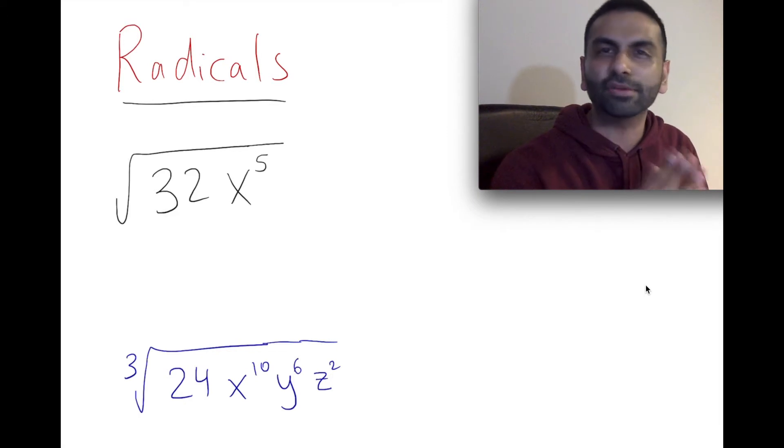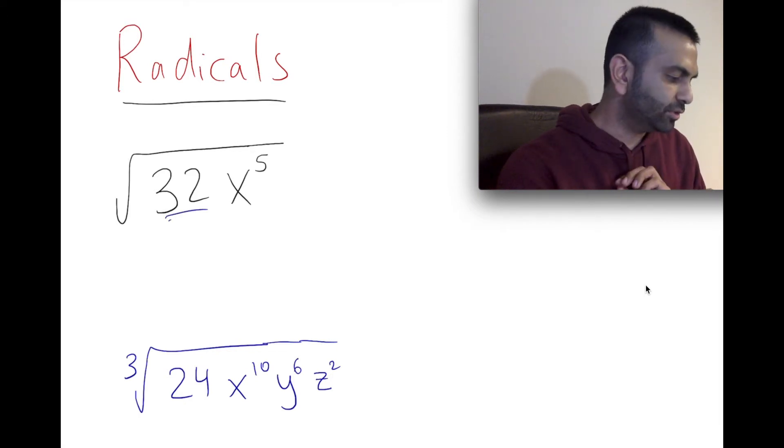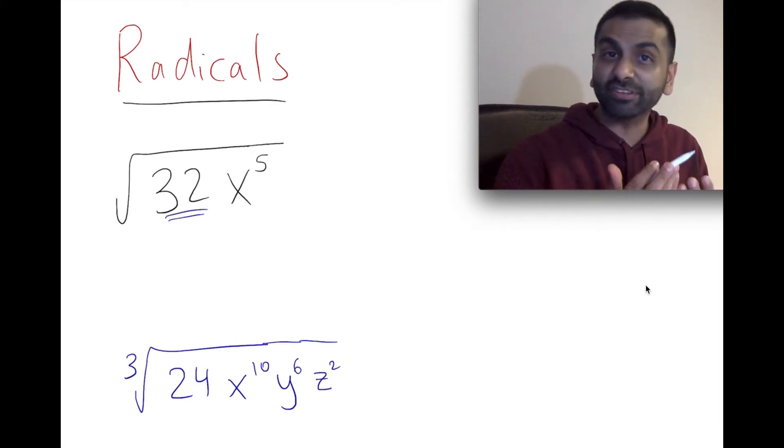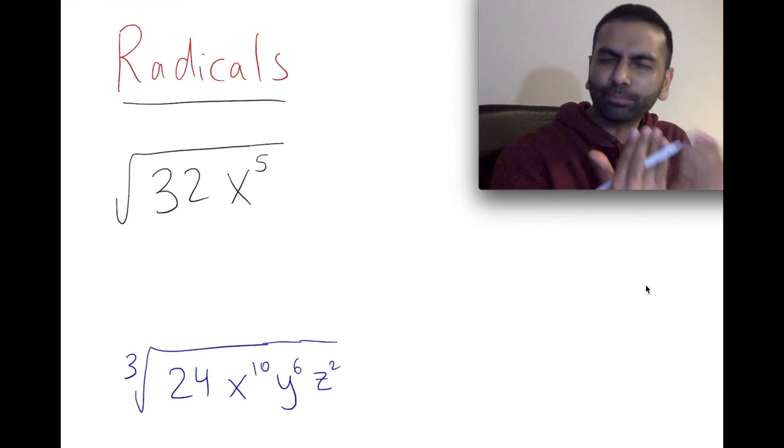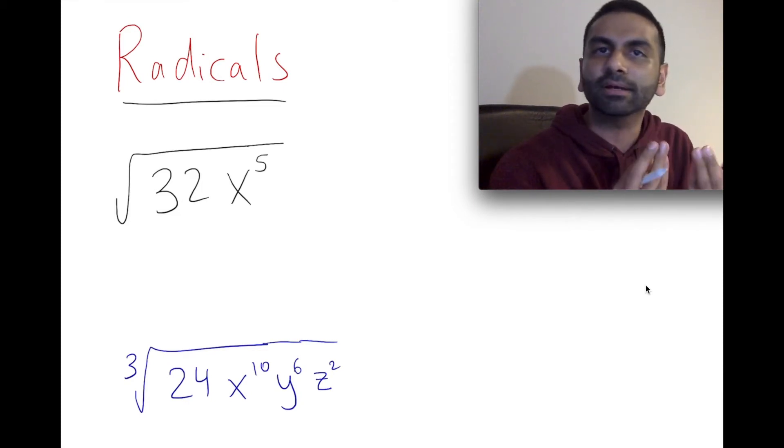Let's first just focus on the 32. If that was a perfect square, like 25, you could just say the square root of 25 is 5, pull that out, and it's just 5 on the outside of a radical. But here, 32 is not a perfect square. So we got to ask ourselves, can we break down 32 as the product of things where one of those things is a perfect square?